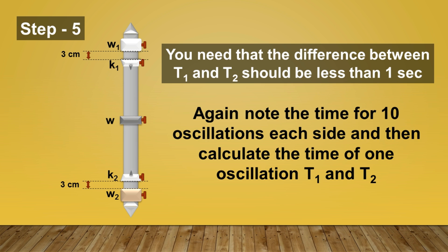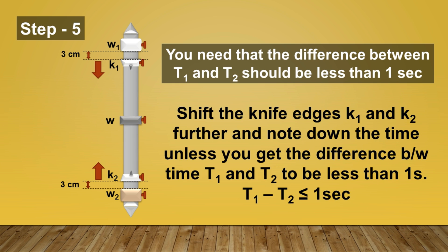Now note down the time for 10 oscillations each side again and then calculate the time of one oscillation T1 and T2. Now again, you can note down the difference between these times T1 and T2. If it is less than 1 second then it is fine. Otherwise, you can shift the knife edge K1 and K2 further to reduce this time.